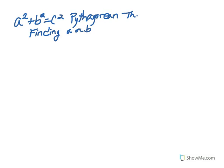In this video, we will use the Pythagorean Theorem to find the missing side of a right triangle. In this case, we are looking for the missing sides of A or B.